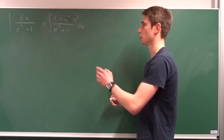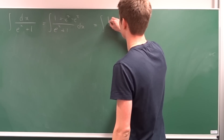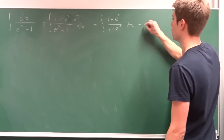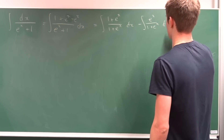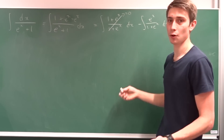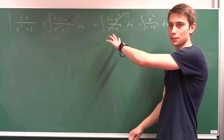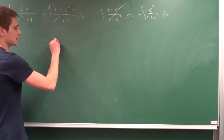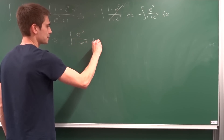Using linearity, we split the fraction: the integral becomes the integral of 1 plus e to the x over 1 plus e to the x dx, minus the integral of e to the x over 1 plus e to the x dx. The first fraction cancels to 1, so its integral is just x. We are now left with x minus the integral of e to the x over 1 plus e to the x dx.